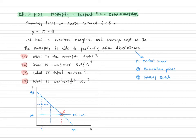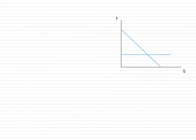A perfectly price discriminating monopoly would produce the same amount as a perfectly competitive firm, charging everybody their reservation price. By doing that, this whole area that we would usually call consumer surplus now becomes monopoly profit. So let's solve this more carefully. We know the demand curve starts at 90 and the marginal and average cost is constant at 30. The question is: what is the monopoly's profit?